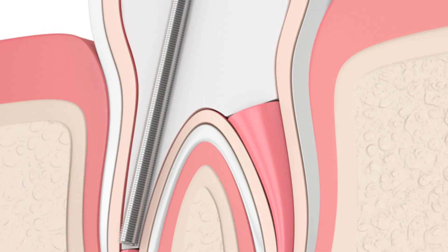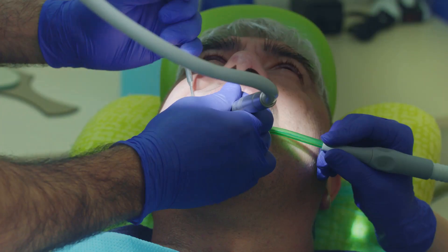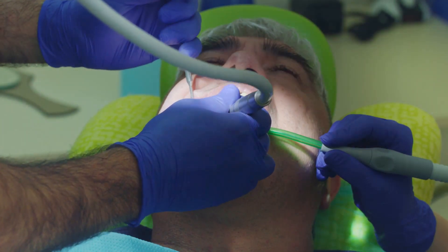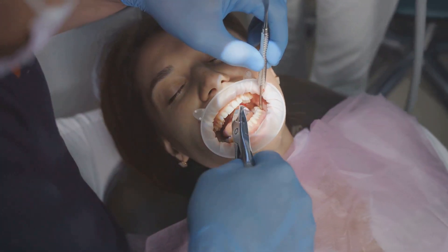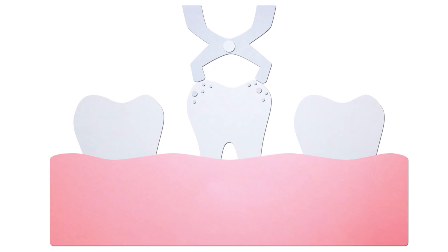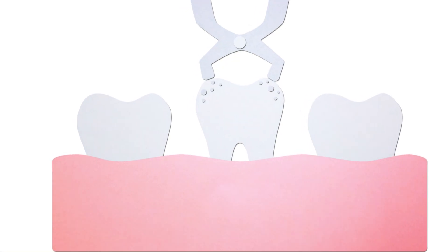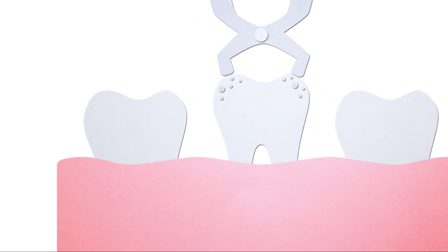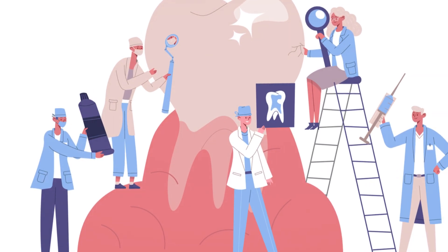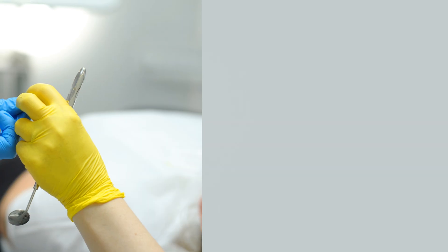Root canal treatment is another common procedure. It involves removing the infected pulp from the tooth; the area is then cleaned and sealed to prevent further infection. In severe cases, the tooth may need to be extracted. A quick response to an abscessed tooth can prevent severe complications. It is important to follow the dentist's instructions and complete the prescribed treatment.